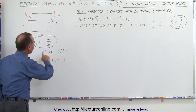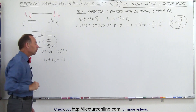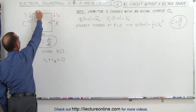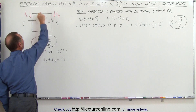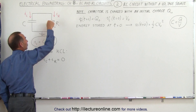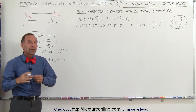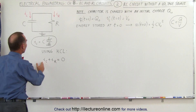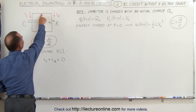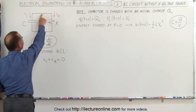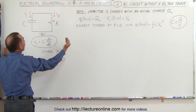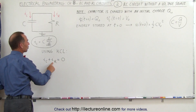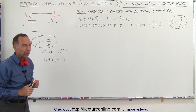Starting with Kirchhoff's current law, at the very top of the circuit we see that current is moving in one direction to the capacitor and in another direction to the resistor. That is arbitrary, but we set it up this way. The sum of the currents leaving this node must equal zero because there are no currents entering that point, so the current to the capacitor plus the current to the resistor must add up to zero.